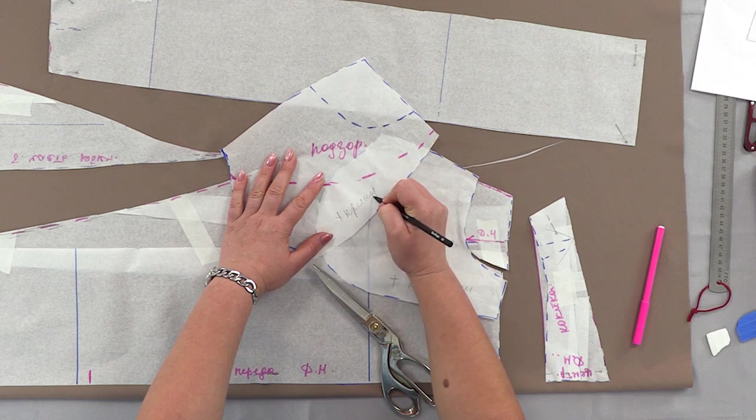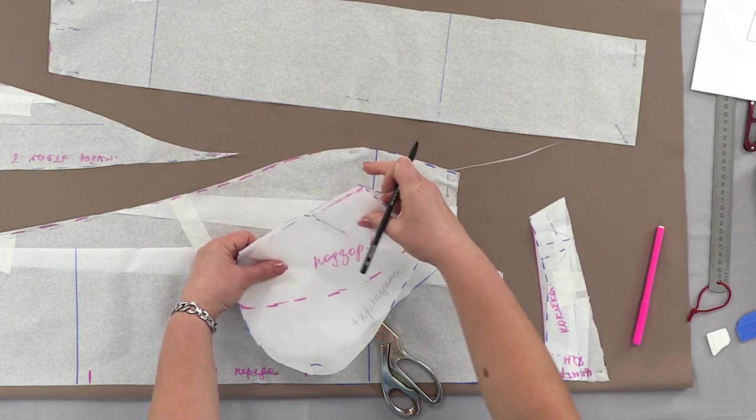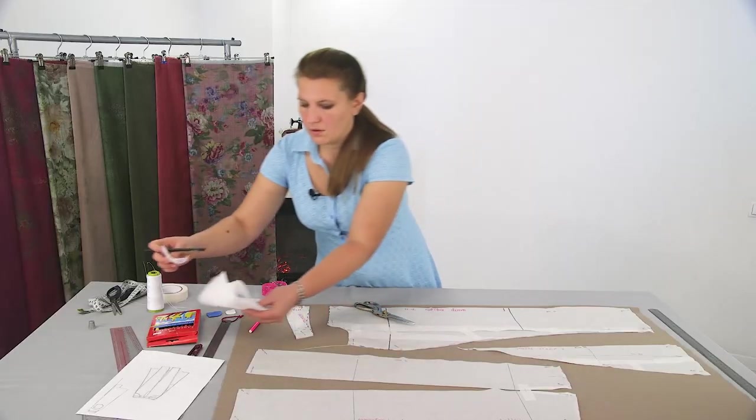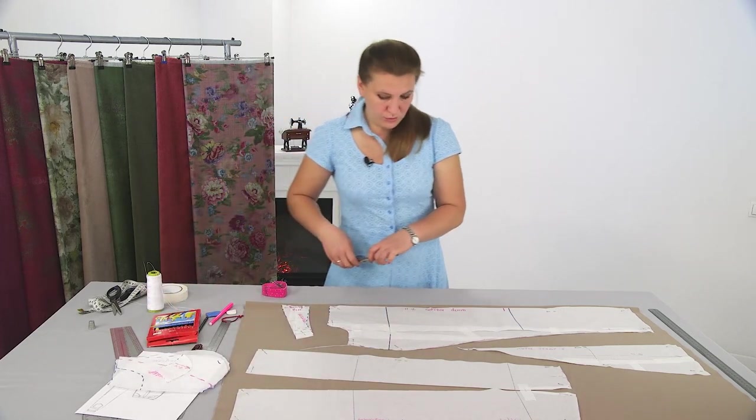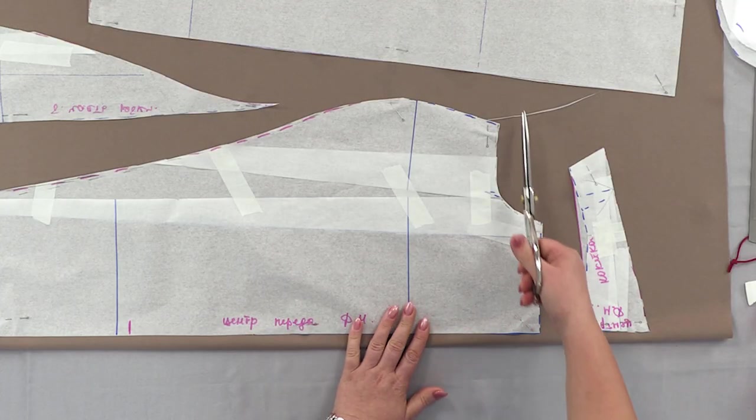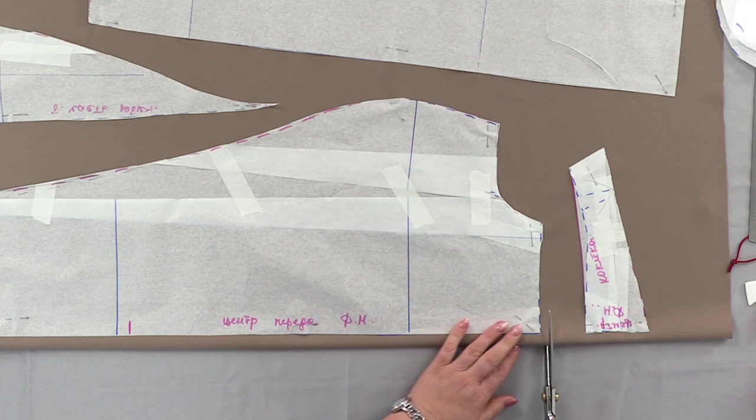Now we put aside all the parts, including this one. And start to cut out our skirt. Let's add around a centimeter on the upper part and 0.7 on the pocket.